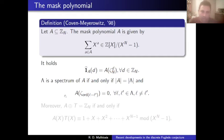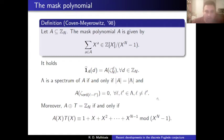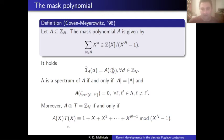Another way to rewrite the spectrum condition: Λ is a spectrum of A if and only if the cardinalities agree, and A vanishes on roots of unity of the form ζ^(λ−λ') for distinct λ, λ' ∈ Λ. The tiling condition can also be written in polynomial form: A and T are a tiling pair if and only if A(x)·T(x) = 1 + x + x² + ··· + x^(N−1) in the quotient ring. This right-hand side is the product of all cyclotomic polynomials Φ_d(x) whose order d divides N, except for x−1.